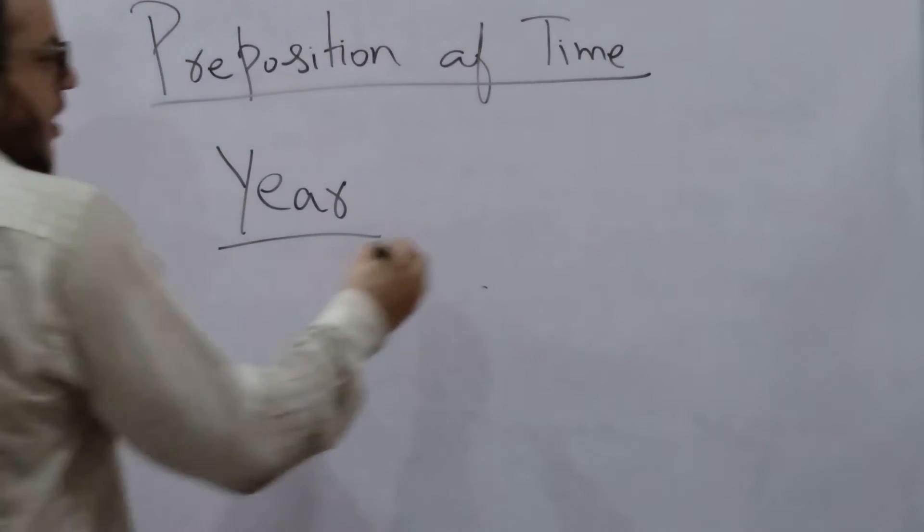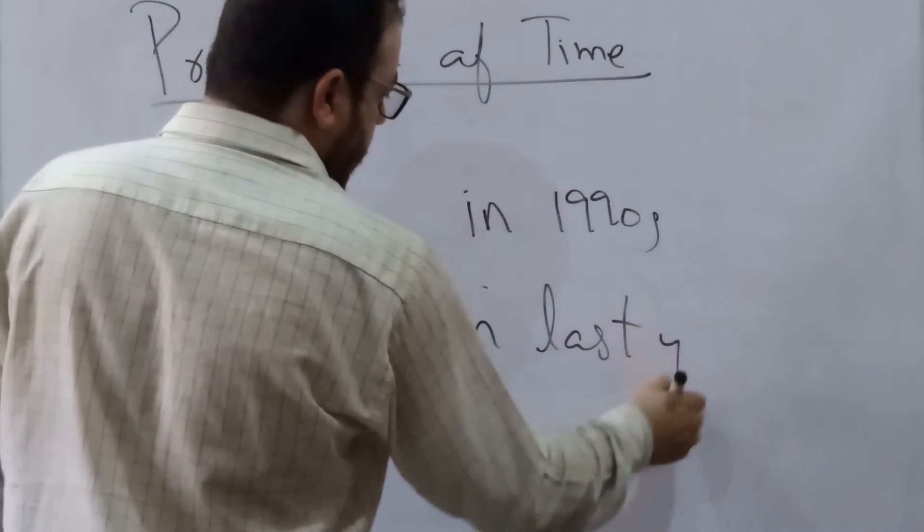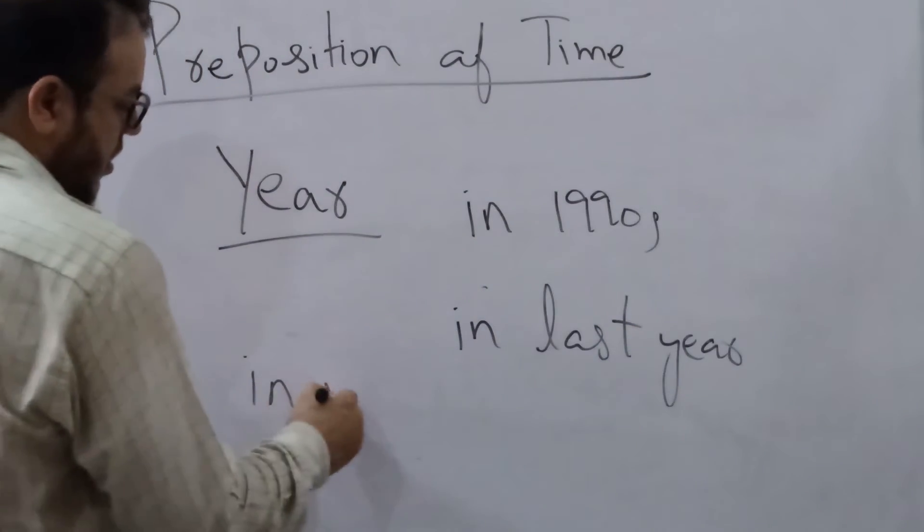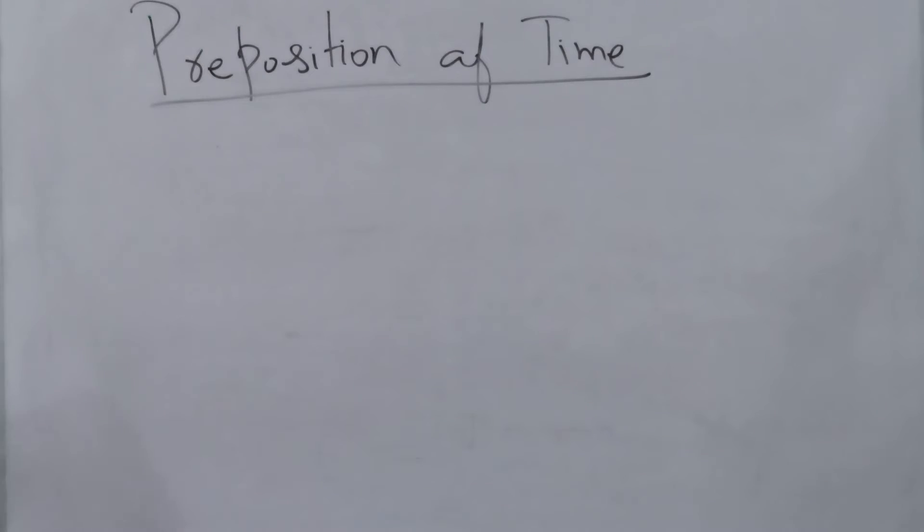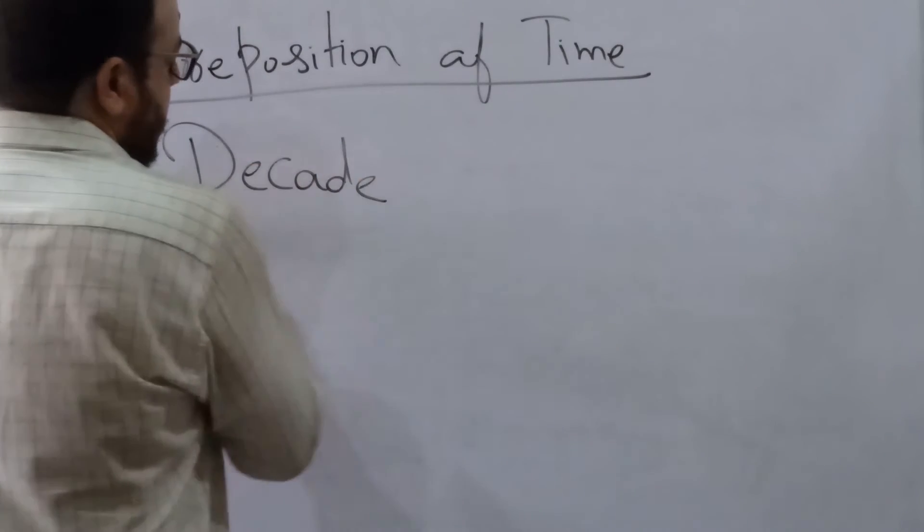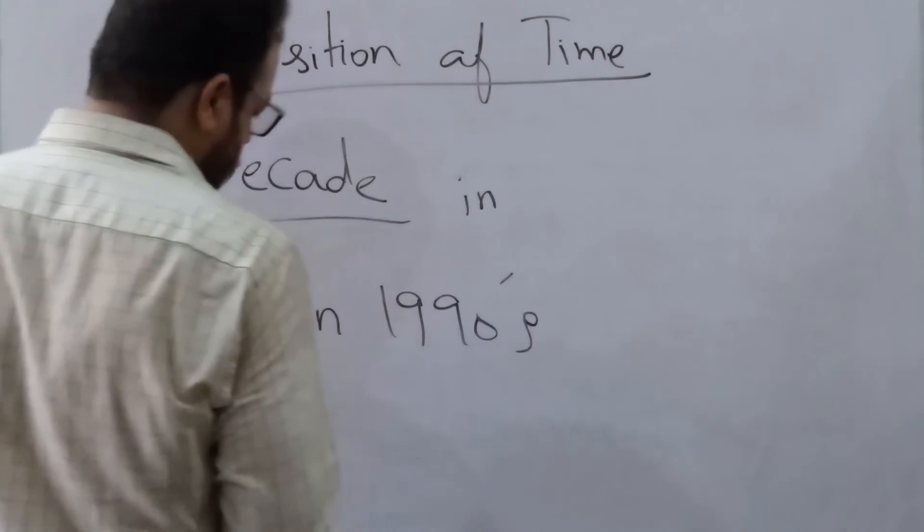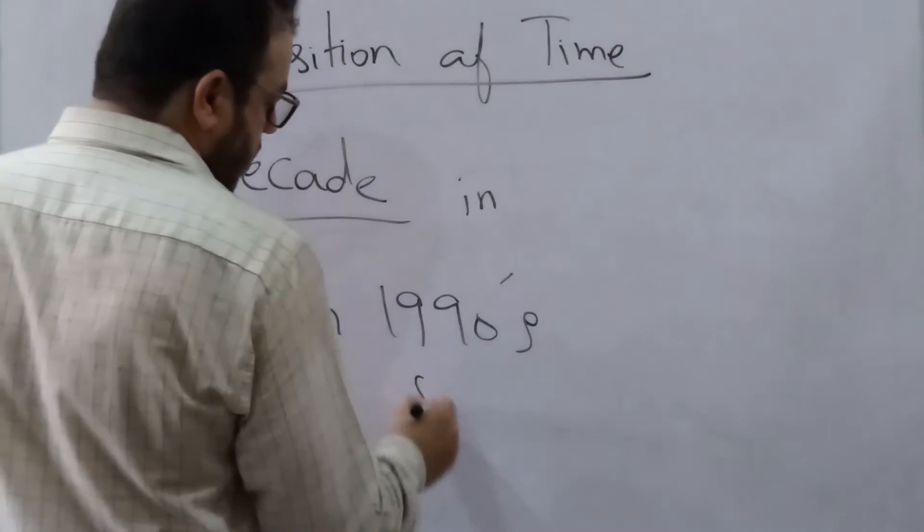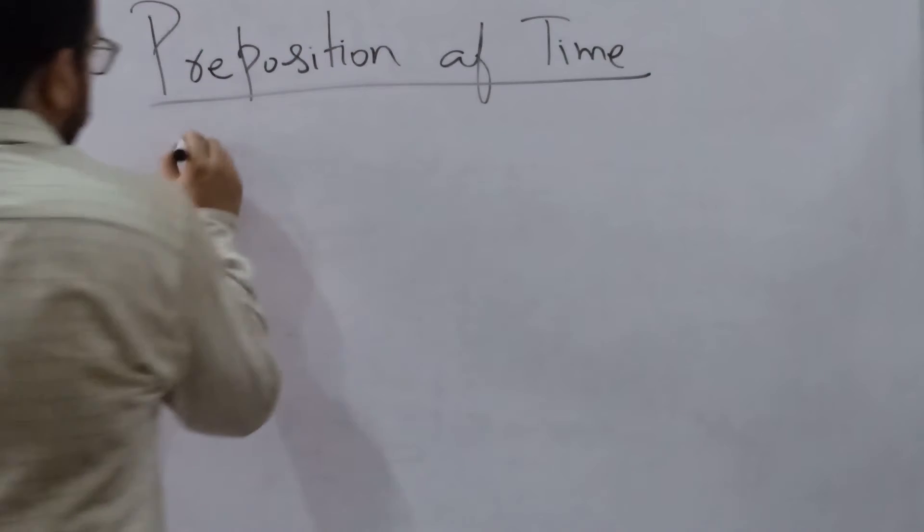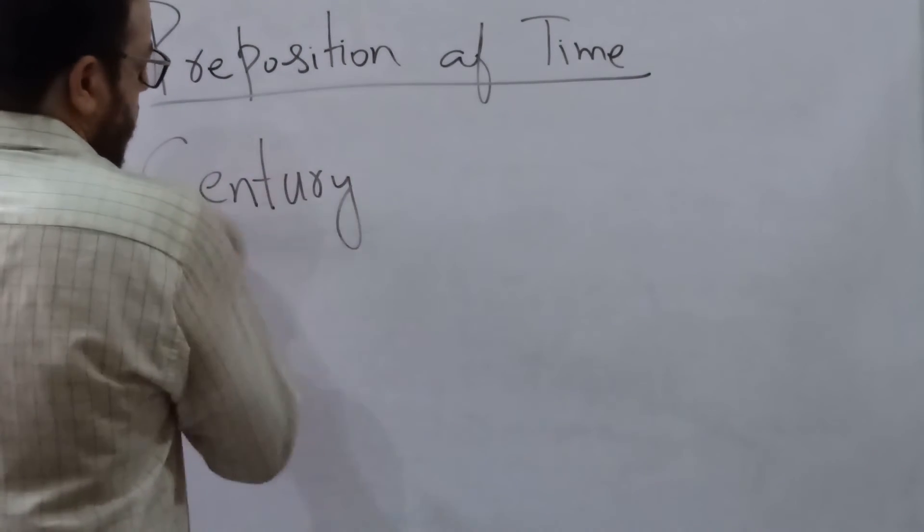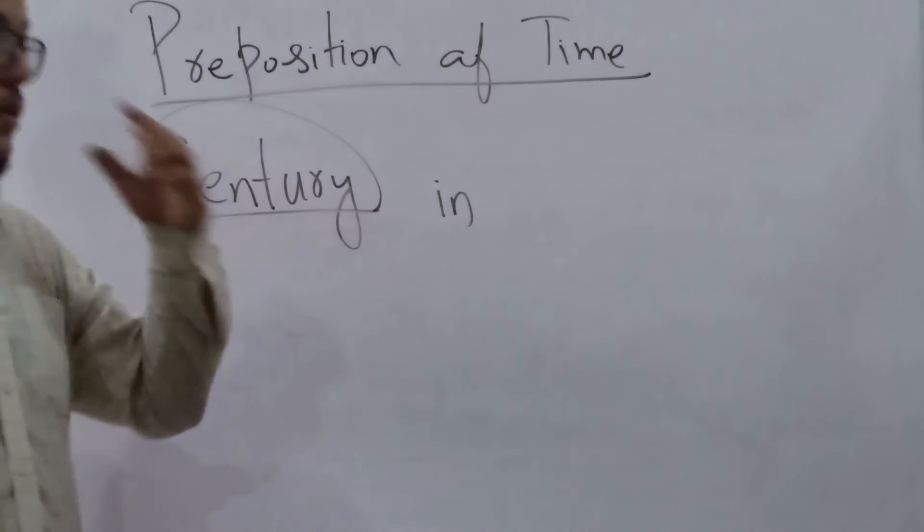When the year comes, we need to use in the year. Then we need to use in decade. In the 90s, in the 80s. So decade will use in. Next we have century. In the 21st century, last century, and this century.